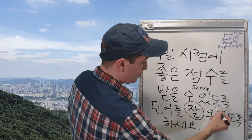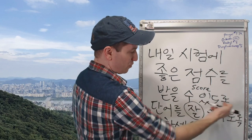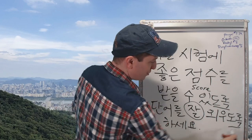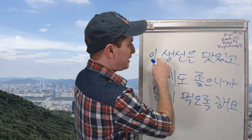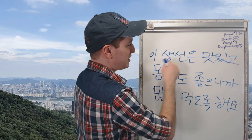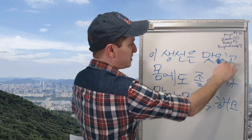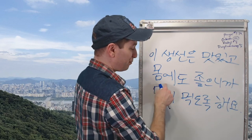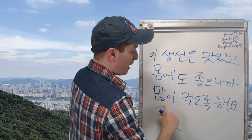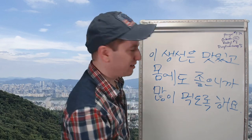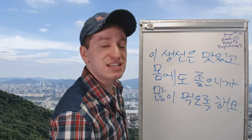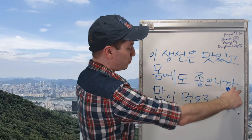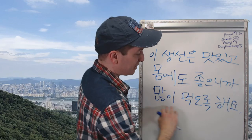Now we've got two uses of 도록: 받을 수 있도록, 'in order to get,' and 외우도록 하다, 'make sure to' — two 도록s in the same sentence. 이 생선은 맛있고 몸에도 좋으니까 많이 먹도록 해요 — 'Because this fish tastes good and is also good for you, make sure to eat a lot.'